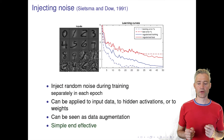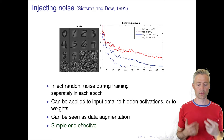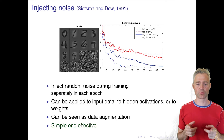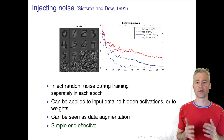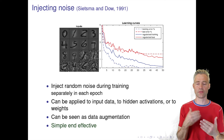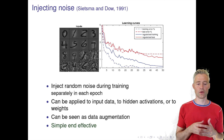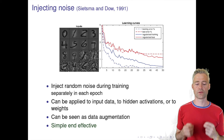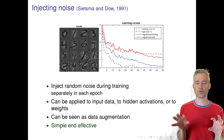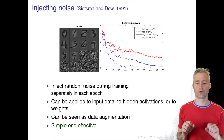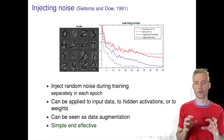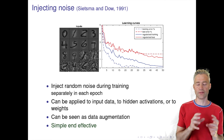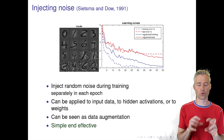We can also inject noise. We can inject noise at different levels — at the input of the data, making these salt-and-pepper versions of the MNIST digits. We can also add noise inside the hidden units, so the hidden units become stochastic. This will avoid the network adapting to very specific features, because those features will not always be present.